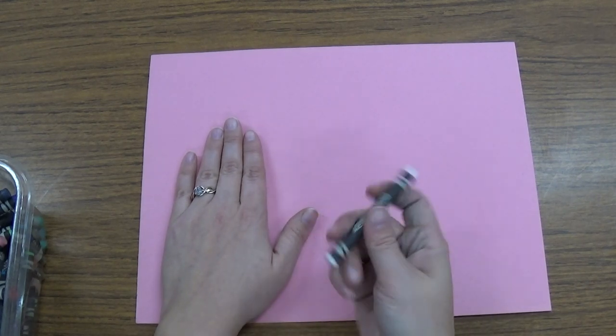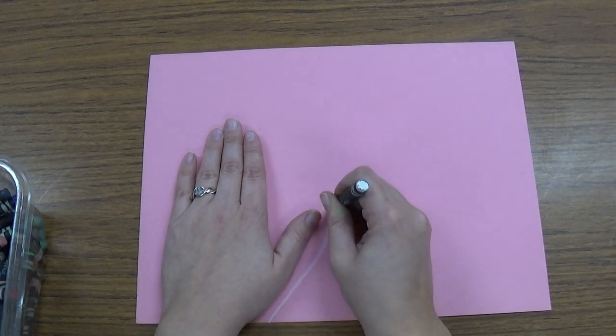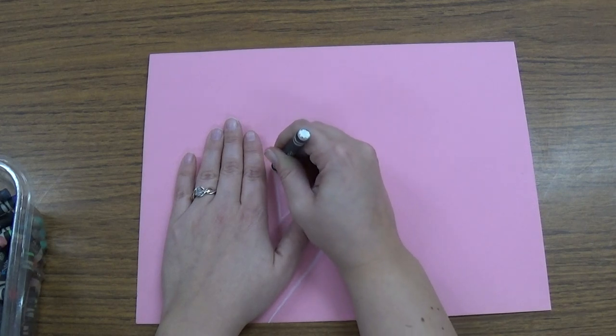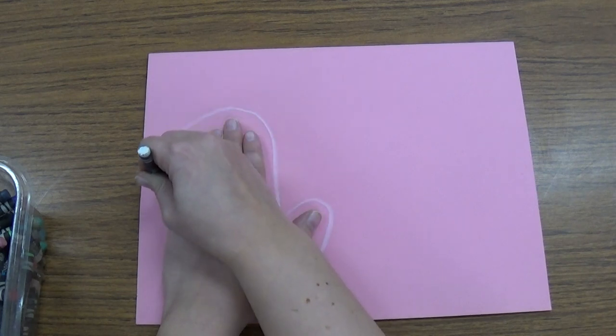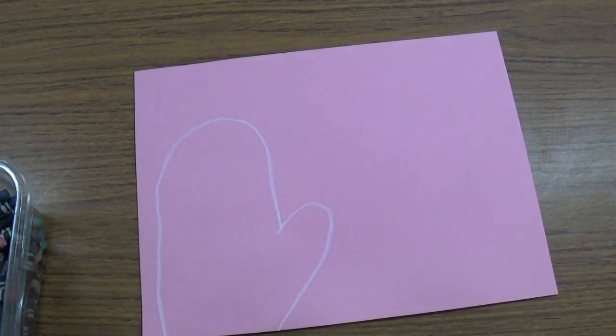And then I'm going to take my crayon and I'm going to trace around, not really touching my hand, I'm just going around it because mittens don't touch right against your hand all the time. They're a little bit bigger so that you can slide your hand inside of it. So I'm drawing a mitten just like that.